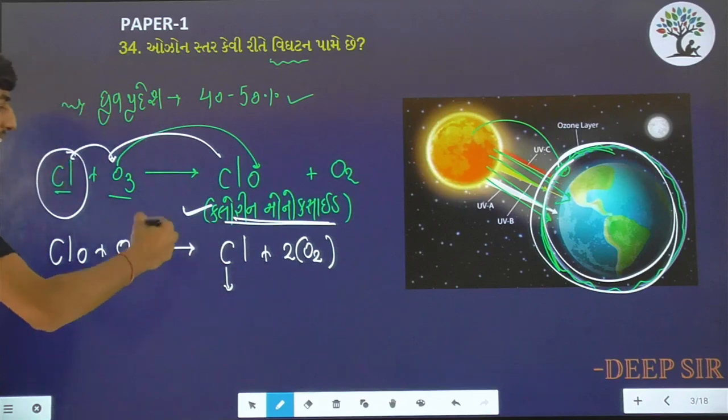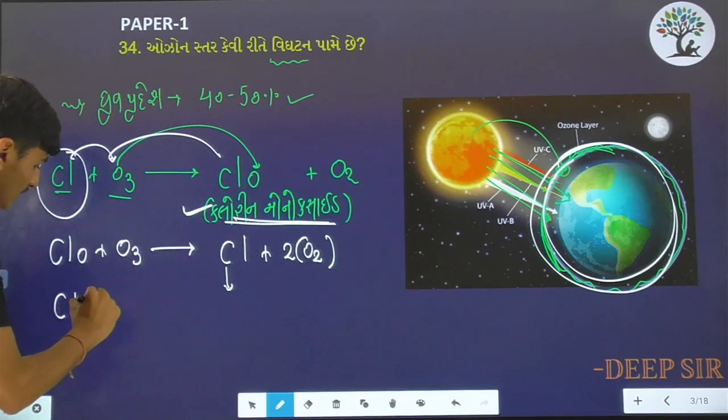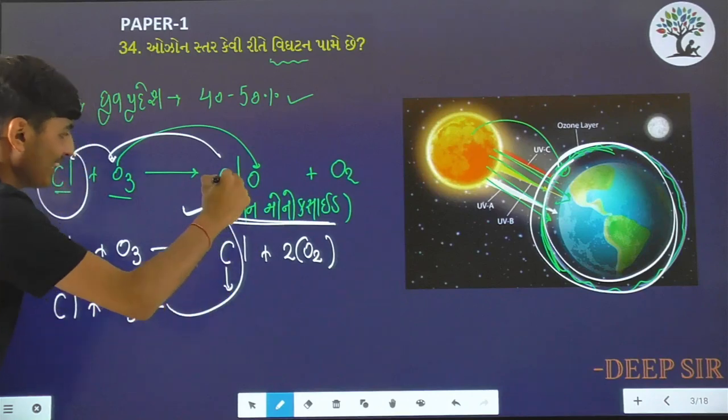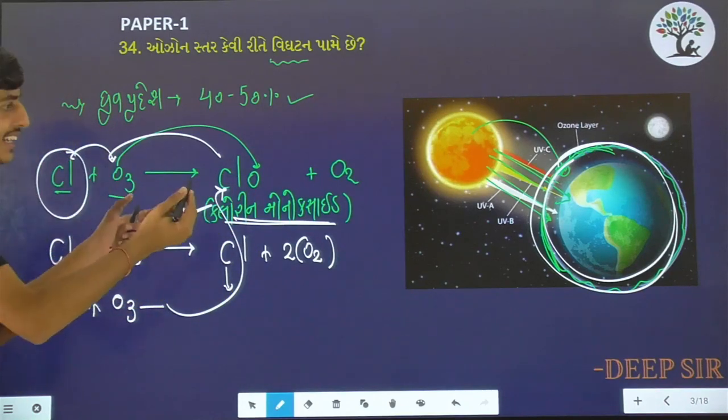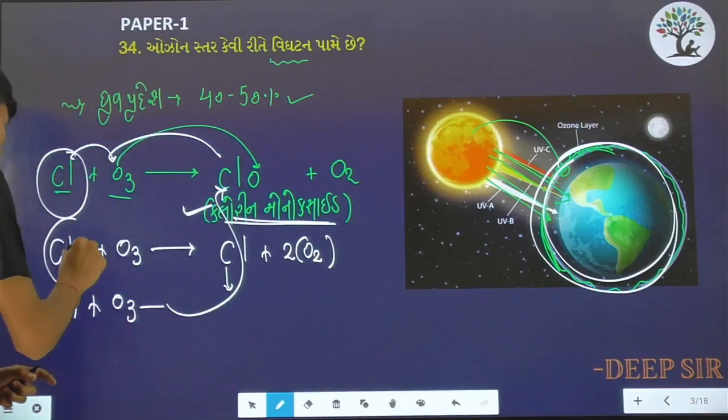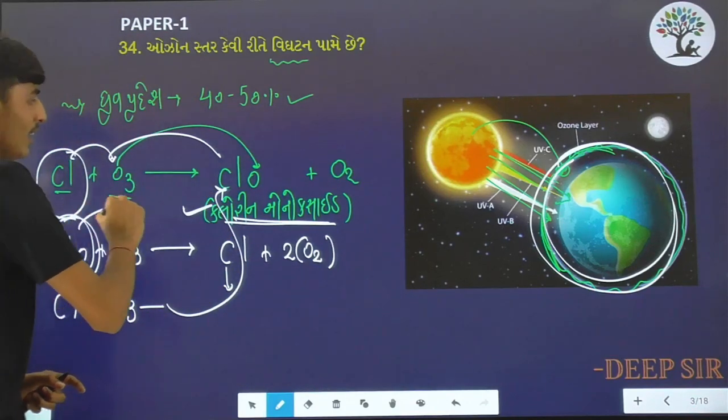Cl is regenerated. Cl plus O3, this is the cycle. This cycle causes loss of ozone.